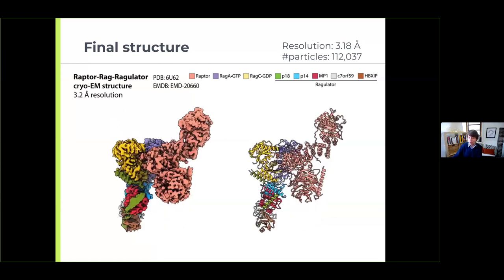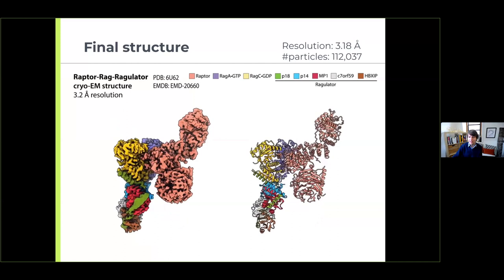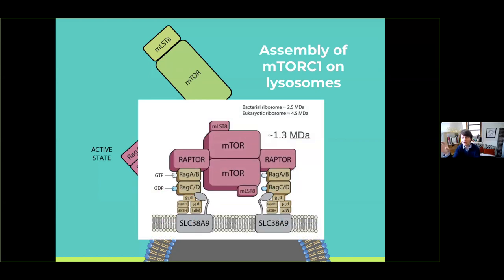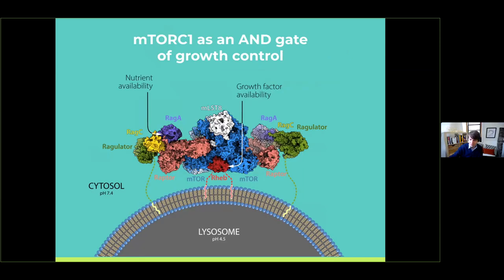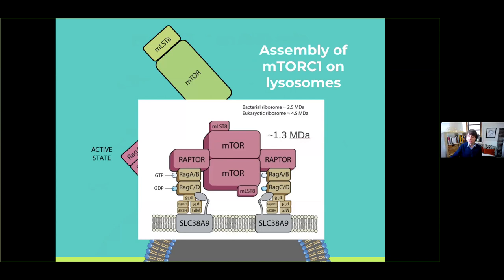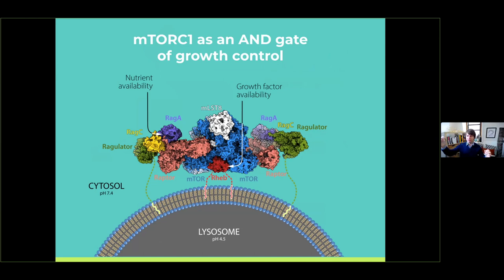Now that we have this structure, we can see how those proteins interact. Going back to our cartoon of mTOR landing on the lysosome — can we now build that image with a detailed atomic structure? We actually can. The RAGs and Regulator are visible, and rather than the RAGs acting as pillars as we previously imagined, they're more like clamps — very flexible on their tails — and they bind Raptor from the top and bring it down to the lysosomal surface so it can interact with Rheb, which would then stick to the mTOR kinase domain.